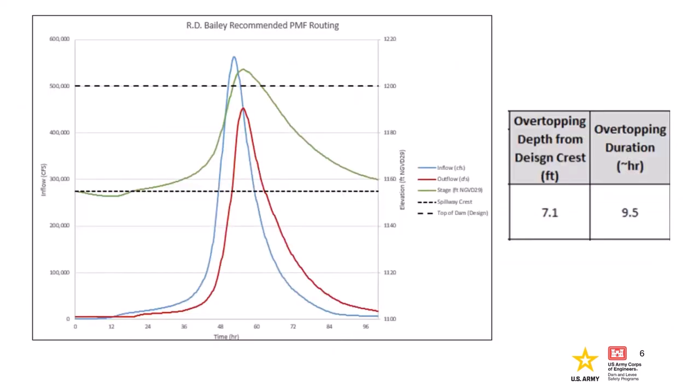The PMF update was completed ahead of the IES study at a base level effort or screening level. That resulted in a little over 7 feet of overtopping of the embankment crest for a duration of about 10 hours. This risk assessment only had one risk driver: overtopping of the embankment during a large flood like a PMF. Because of the combination of frequency and consequences, the risk was above our tolerable guidelines, which warranted further study.